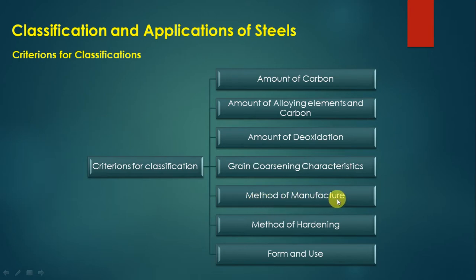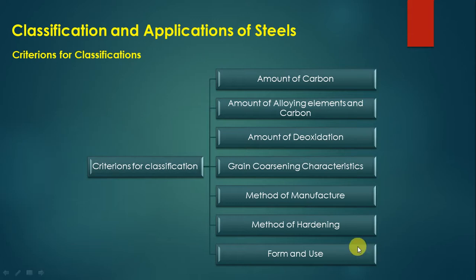The fifth criterion is the method of manufacture — how the steel is produced and what type of manufacturing process was adopted. The sixth criterion is the method of hardening — whether it is shallow hardened or fully hardened.